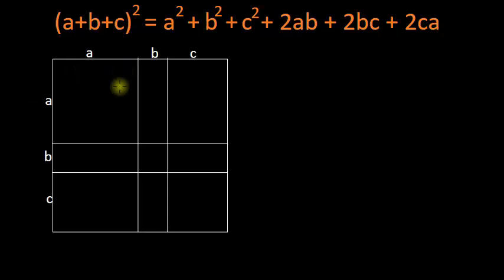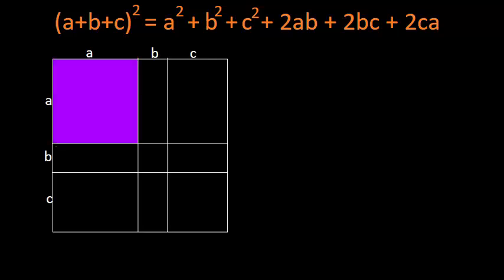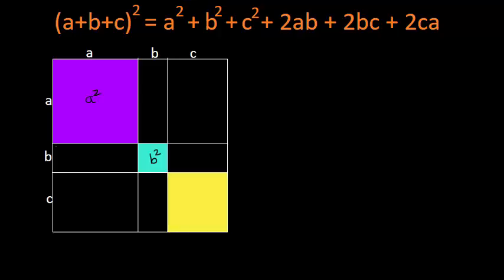Out of which we have this square whose one side is equal to a. Since its one side is equal to a, its area will be a square. Then we have one more square with side equal to b, so the area will be b square. And then we have one more square whose side is equal to c, so the area will be c square.